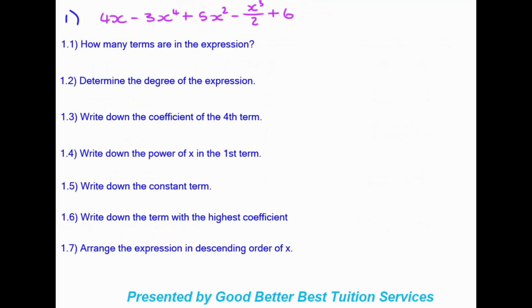Moving on to the next example, we're given the expression: 4x minus 3x to the power of 4, plus 5x squared, minus x to the power of 3 over 2, plus 6. There are many questions set below, and in most papers this is usually question 2 or 3 with many marks available. First, how many terms are in the expression? Terms are separated by positives and negatives, and fractions count as one term, so we count one, two, three, four, five — there are five terms.